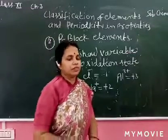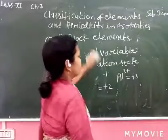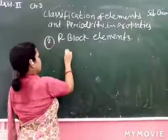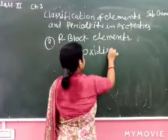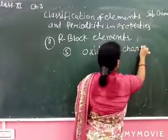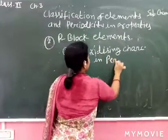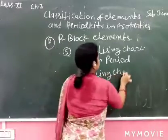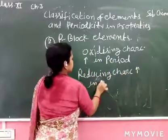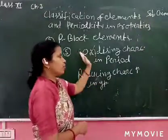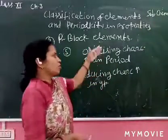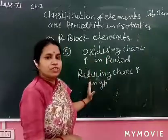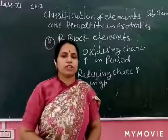Fifth point: oxidizing character increases across a period, and reducing character increases down a group. Oxidizing character increases in a period and reducing character increases from top to bottom in a group. Oxidation means which is a reducing agent, and reduction means which is an oxidizing agent.